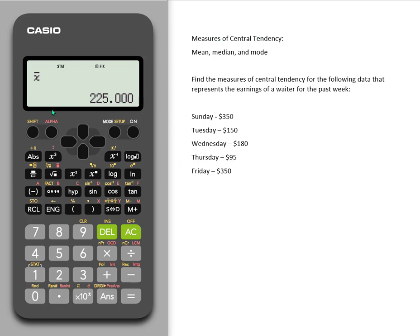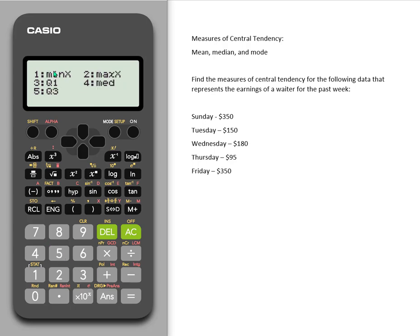How would I then find the median? Let's do Shift 1 again to get back to the stat options. Median is going to be in number 5. In that menu, you can find the minimum x, the max x, the quartiles, and the median. We're interested in the median, so we're going to hit number 4. When you hit equal, it finds the median of this set of data.